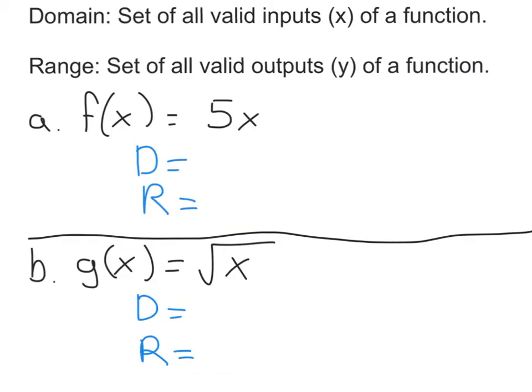The next thing we need to talk about for functions are domain and range. These are fancy words for all the things you can plug into a function and all the things you can get out of it. The domain is the set of all valid inputs, which are typically x's. The range is the set of all valid outputs, which are typically y's. Sometimes it can be difficult to come up with domain and range just by looking at the function, but these examples are pretty simple.